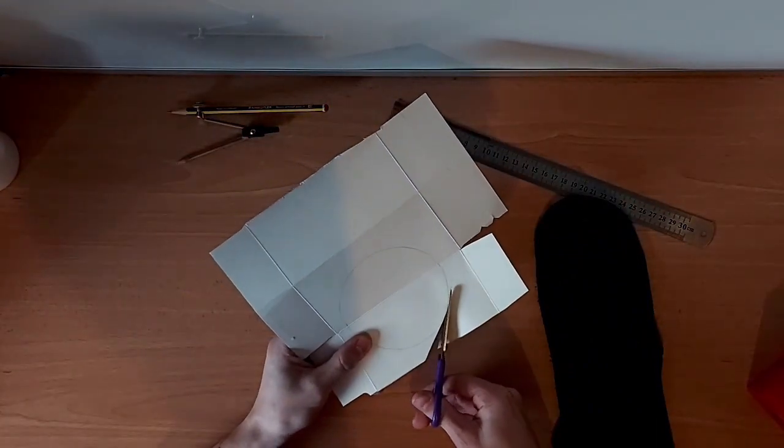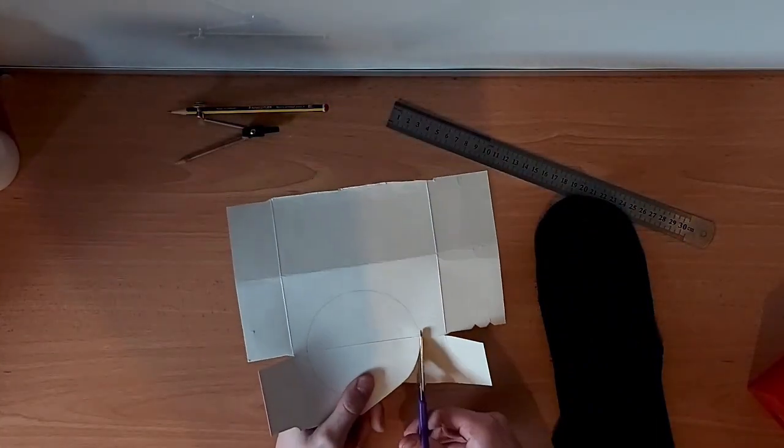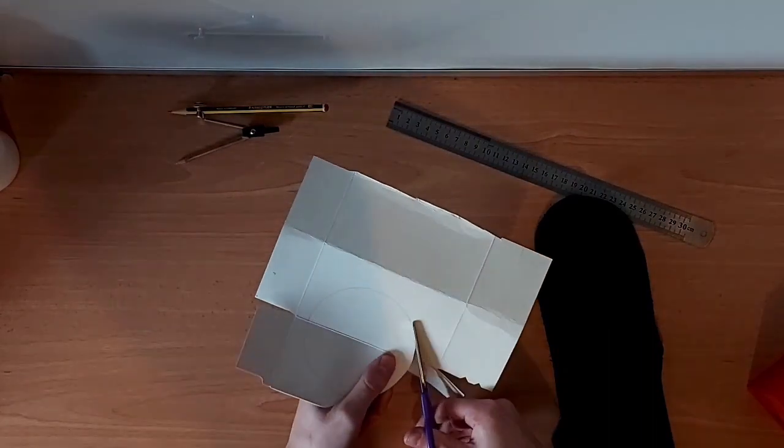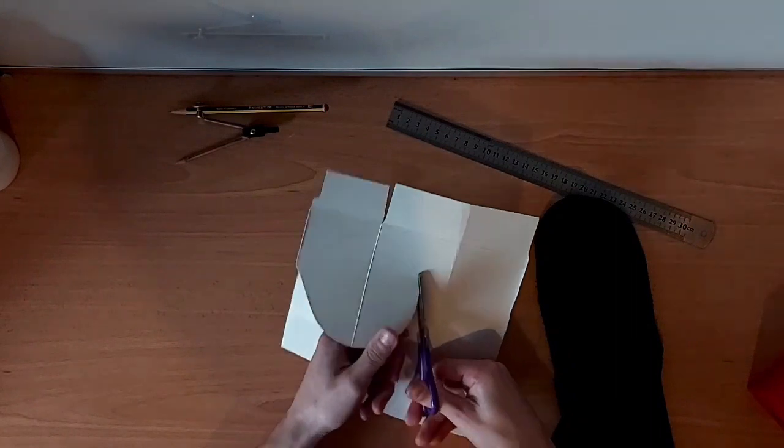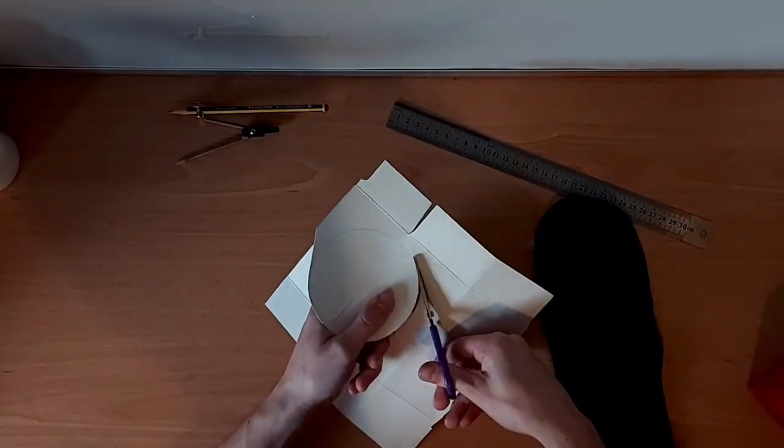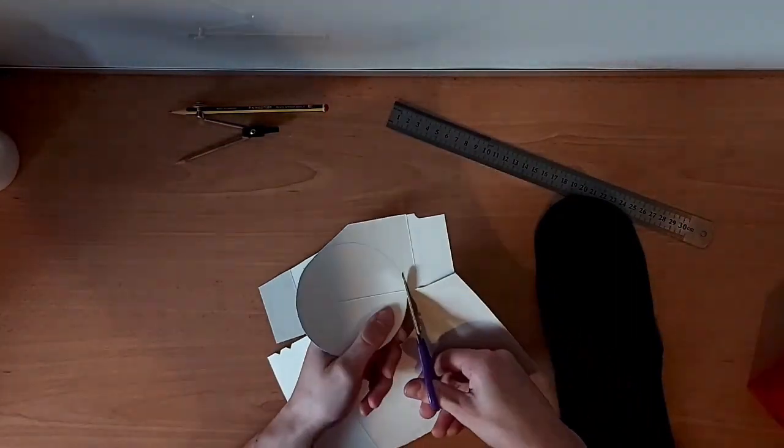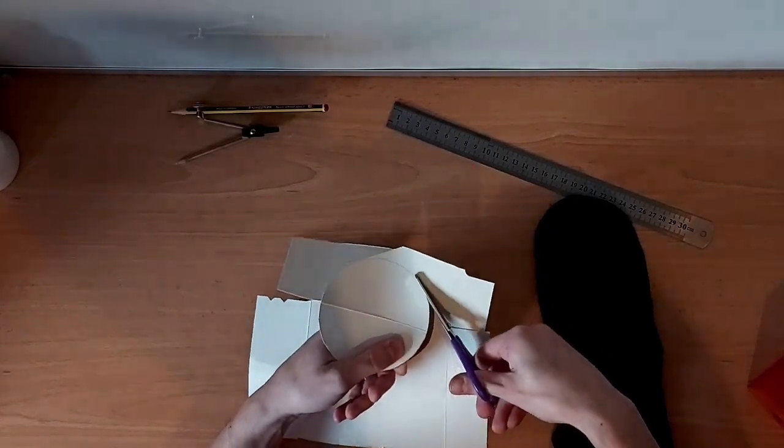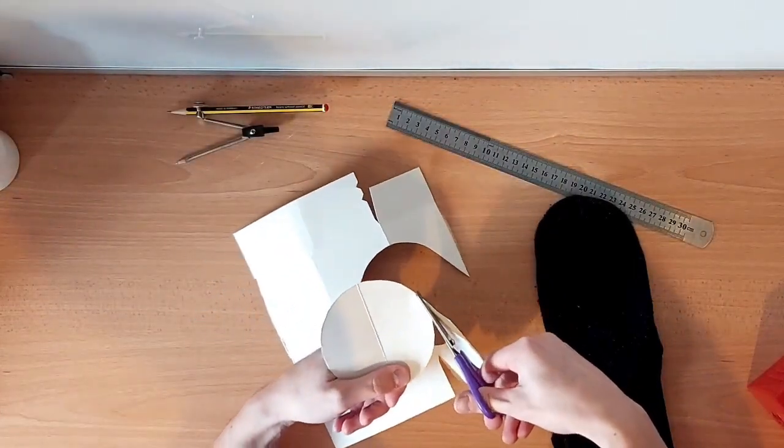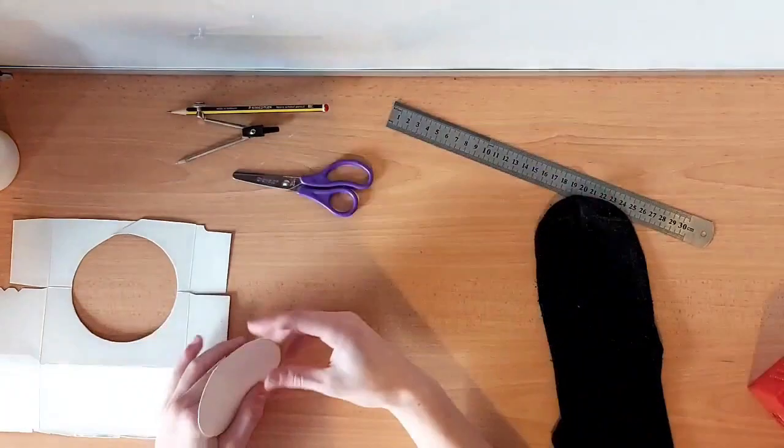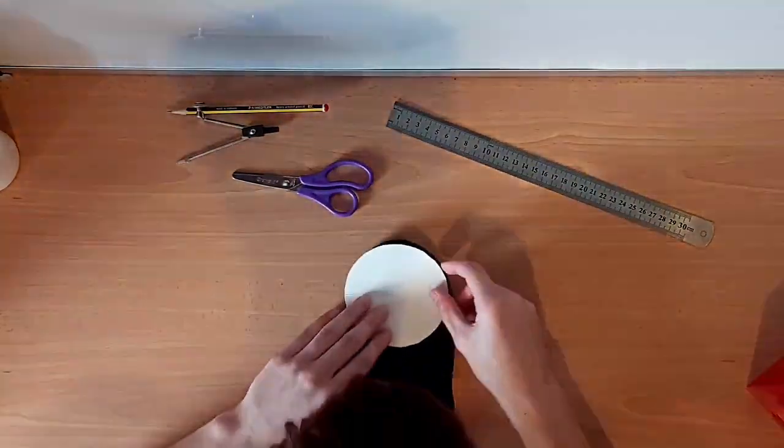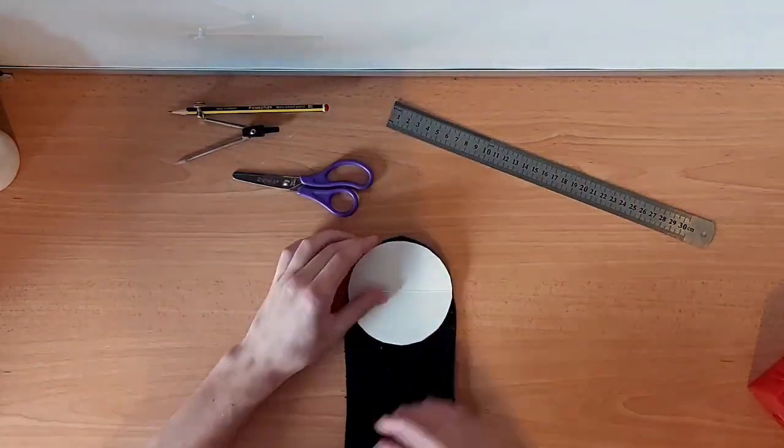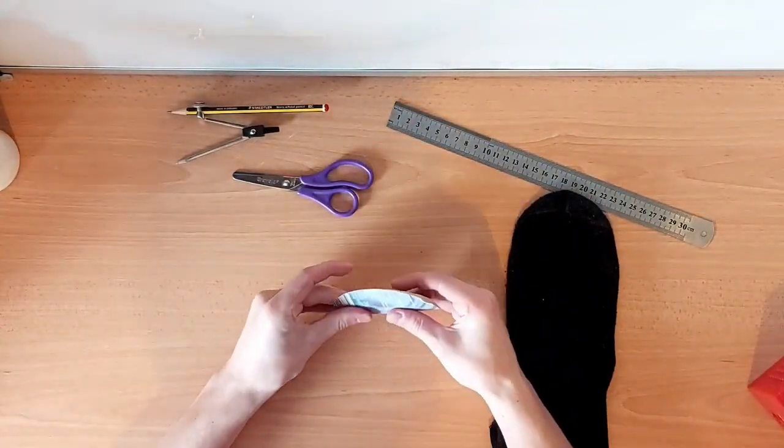You now need to cut this circle out of the cardboard. Now that the circle has been cut out, you're just going to make sure that it is the right size for the sock, and then you need to fold it in half.